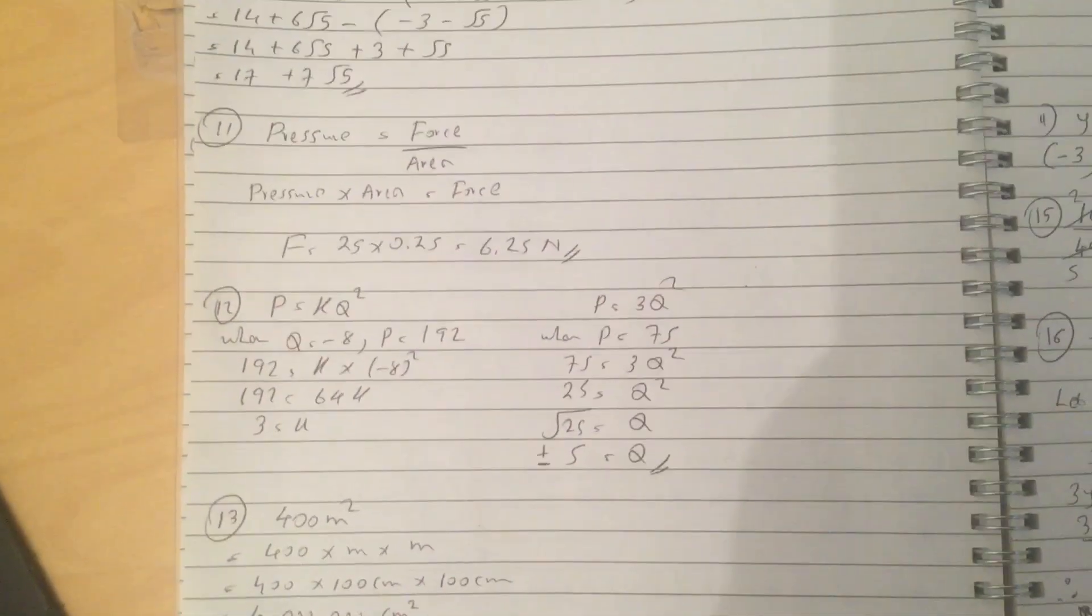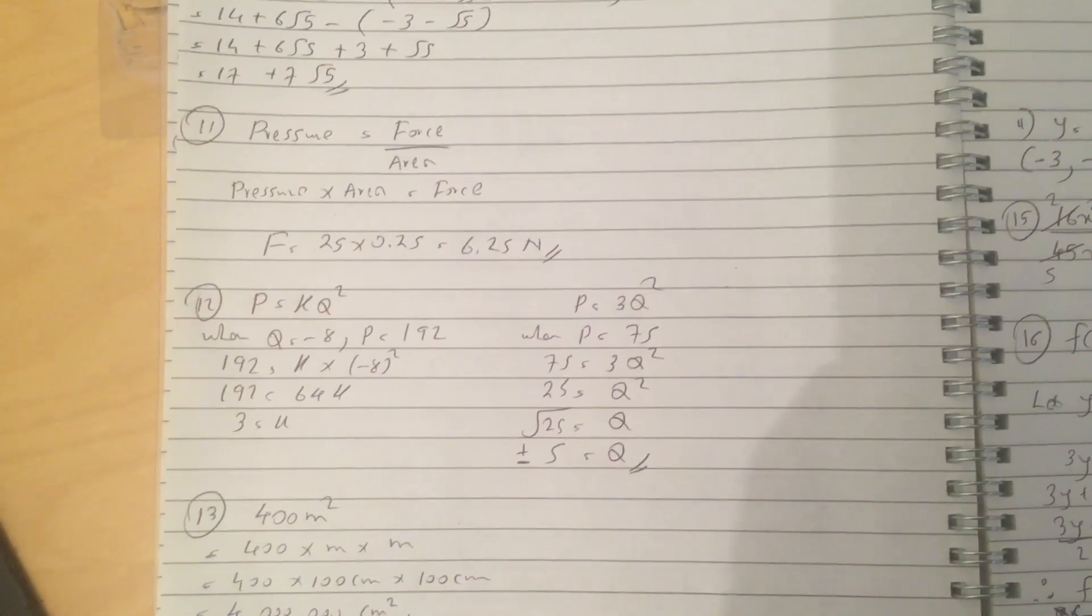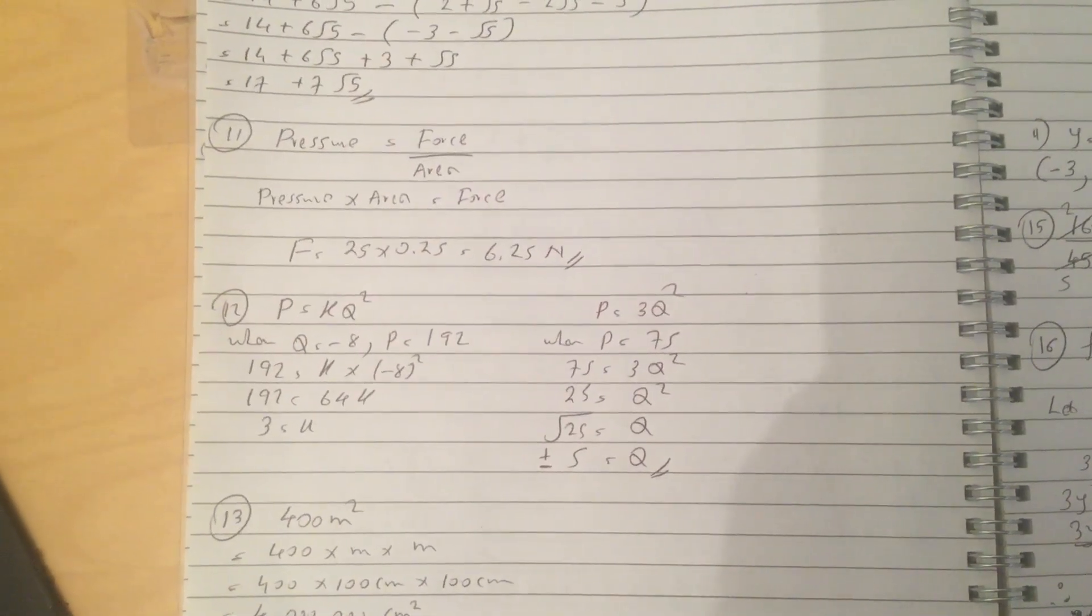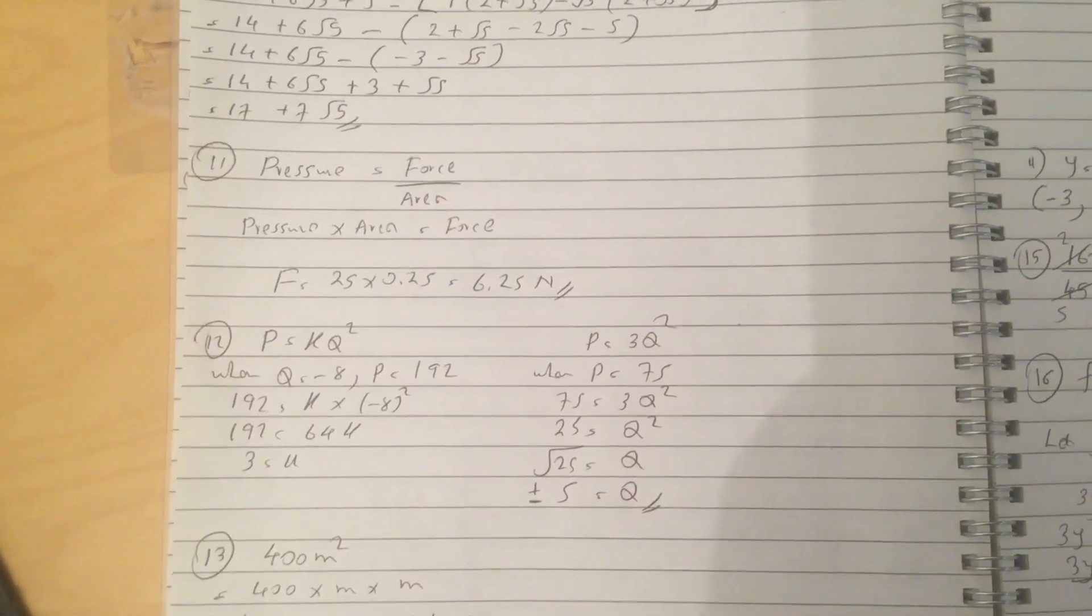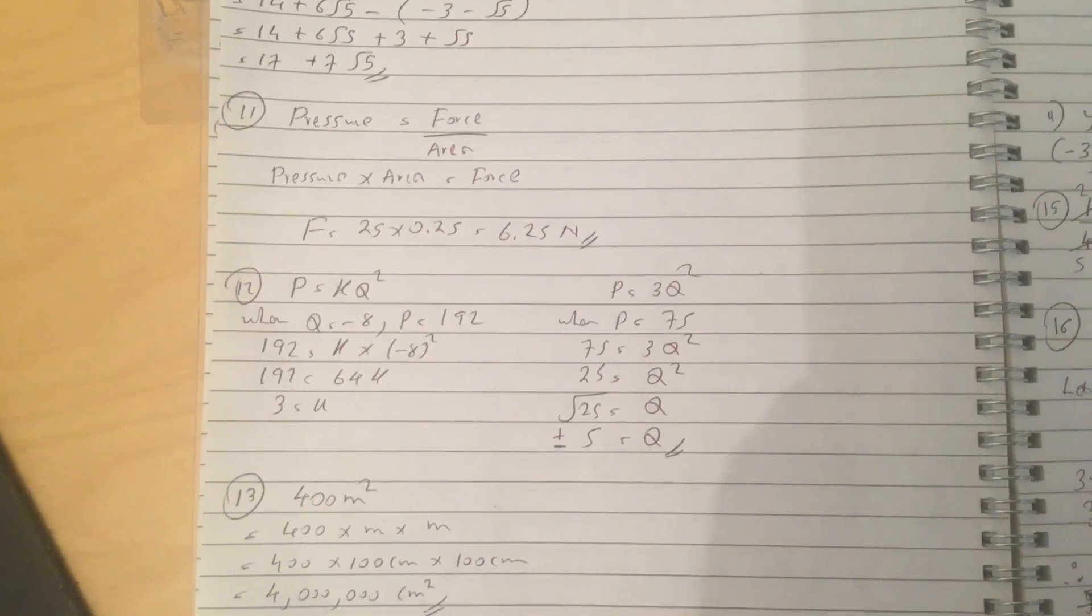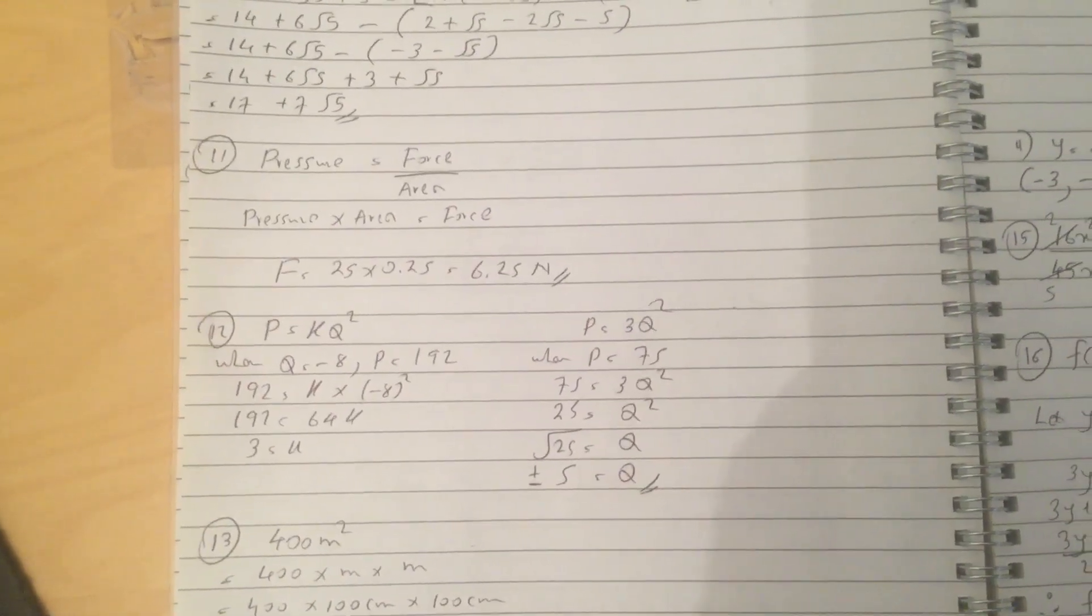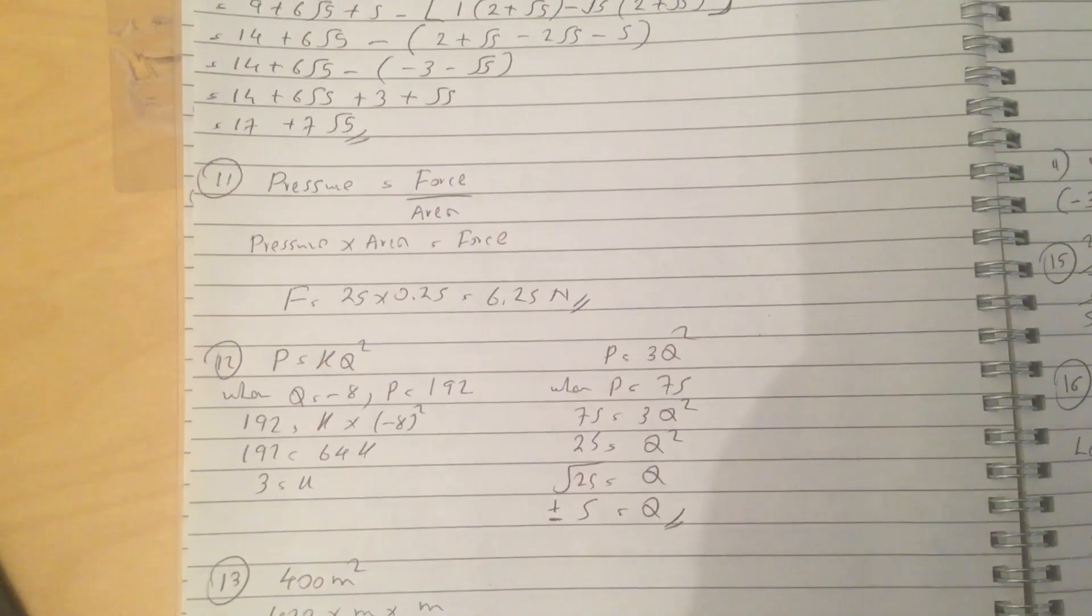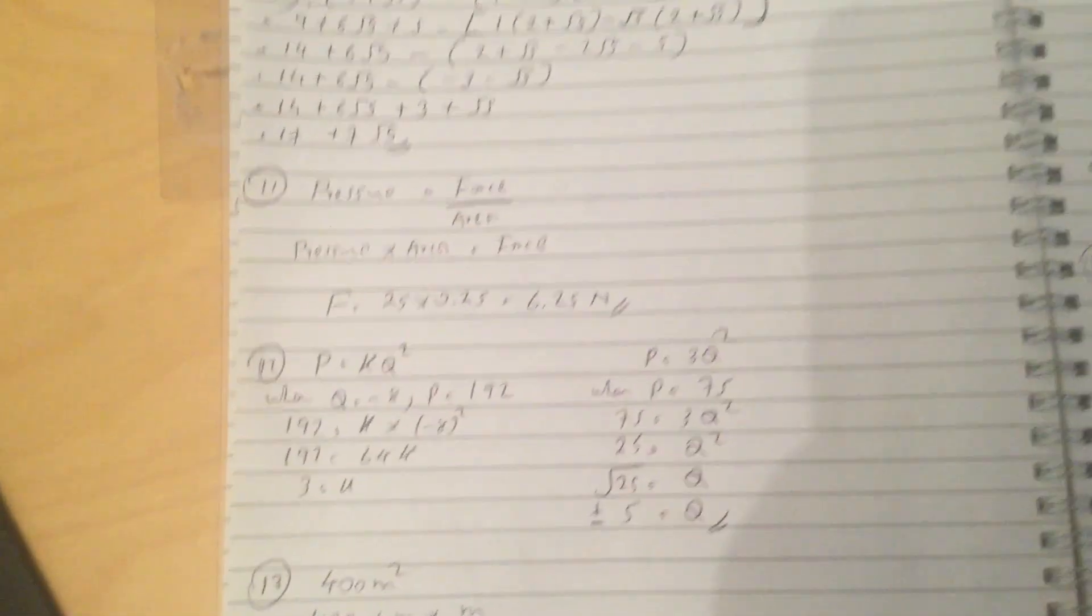Question 12 is a proportionality question. P is proportional to Q squared, so you write P equals K Q squared, and you work out the value of K, which is 3. And then once you've got that, you put P equals 75 to get Q equals the square root of 25, which is plus or minus 5. A lot of people forget to put the plus or minus, if you forget the minus, you will lose a mark.